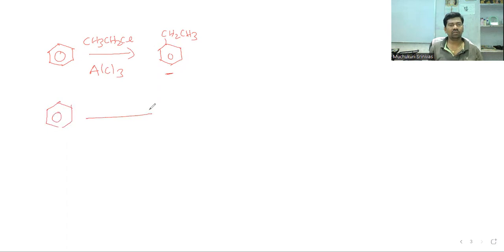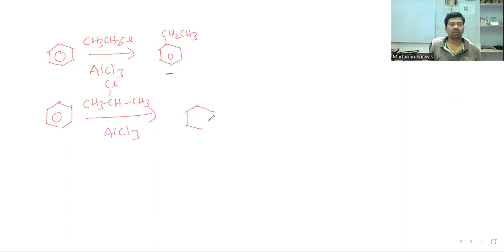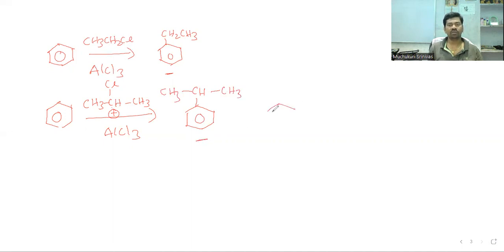Next example: benzene plus CH3CHClCH3 with AlCl3. The chlorine leaves from the secondary carbon position, forming a secondary carbocation. The middle carbon holds the positive charge, and the product is isopropylbenzene (cumene), with a CH(CH3)2 group on the ring.